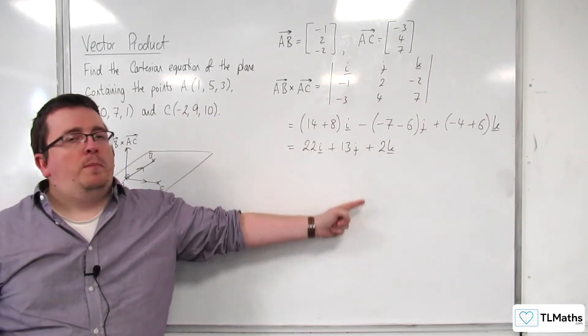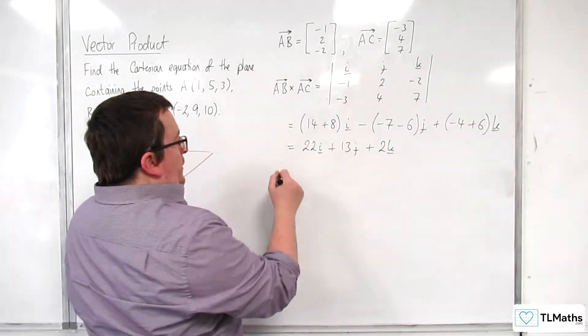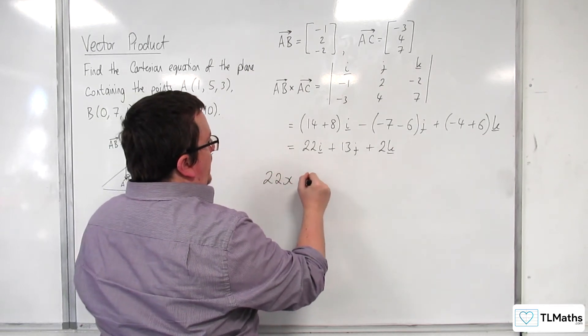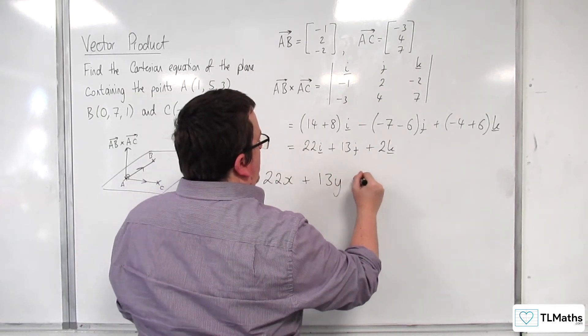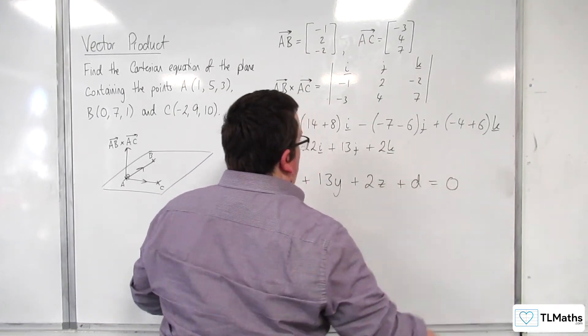So this is my normal vector to the plane. So I can now say that the Cartesian equation of the plane will be 22X plus 13Y plus 2Z plus D is equal to 0.